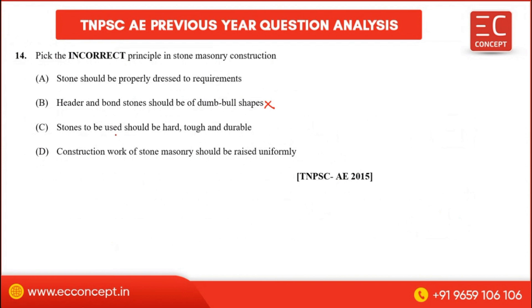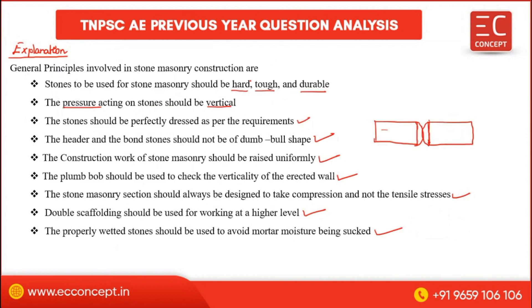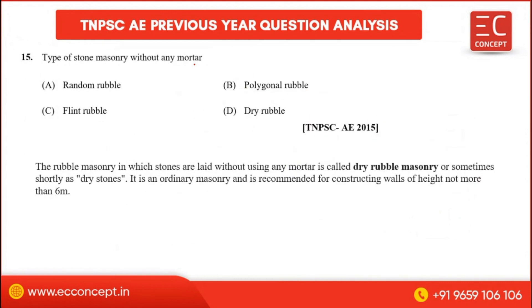To summarize: stones to be used shall be hard, tough, and durable. Stone dressing and uniform raising of construction work are correct principles. The incorrect statement is that header and bond stones should be of dumbbell shape — this is the incorrect principle in stone masonry construction.